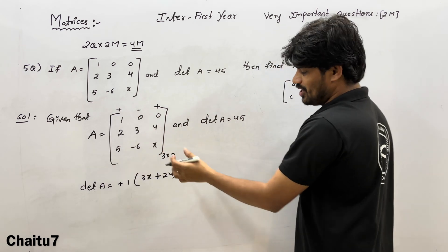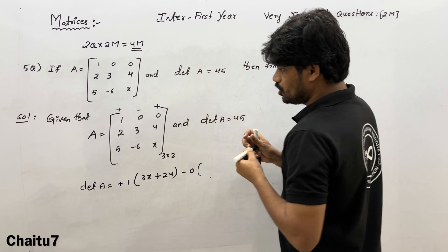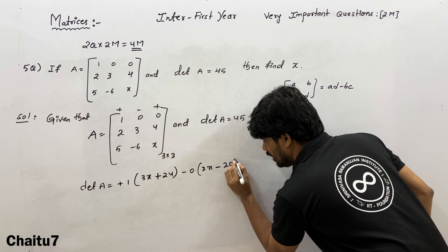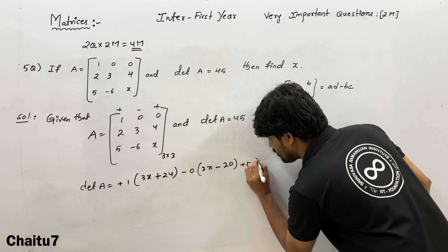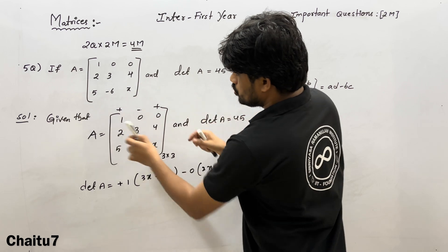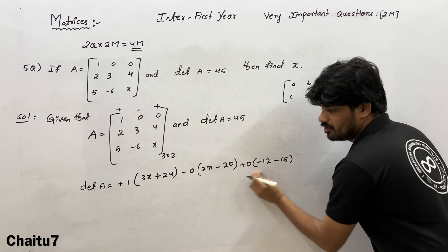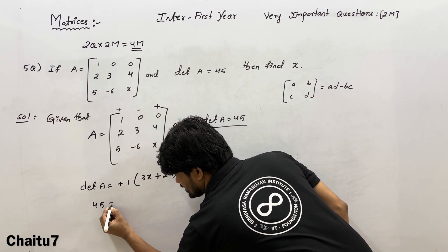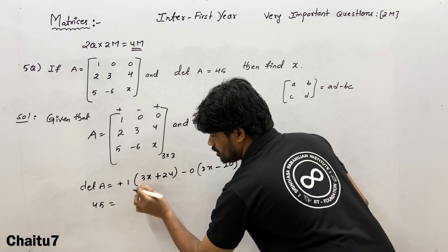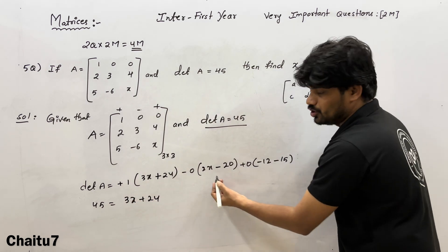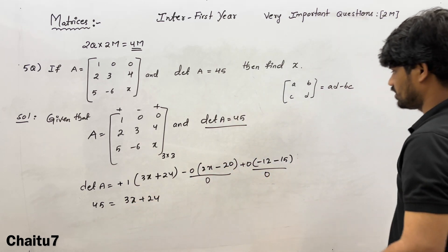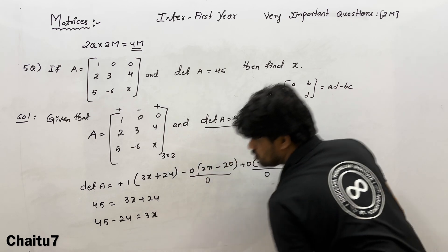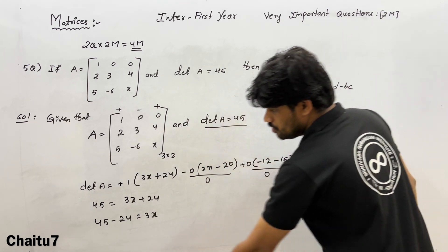So det(A) = 1 × (3x + 24) = 3x + 24. Setting this equal to 45: 3x + 24 = 45, so 3x = 45 − 24 = 21, therefore x = 7.